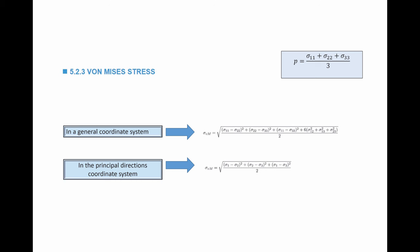In a general coordinate system, the von Mises stress equals the square root of (1/2) times [(sigma_11 minus sigma_22)² plus (sigma_22 minus sigma_33)² plus (sigma_11 minus sigma_33)²] plus 6 times [sigma_12² plus sigma_13² plus sigma_23²]. In the principal coordinate system, where only principal stresses exist, the von Mises stress simplifies to the square root of [(sigma_1 minus sigma_2)² plus (sigma_2 minus sigma_3)² plus (sigma_1 minus sigma_3)²] divided by 2.